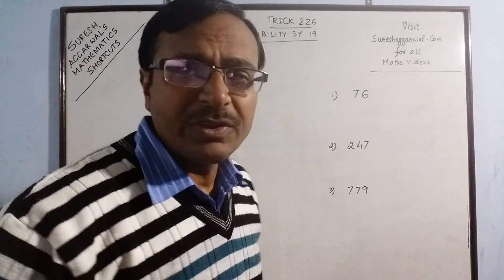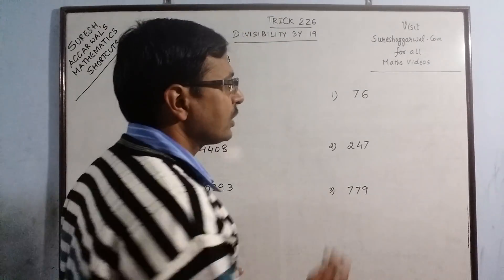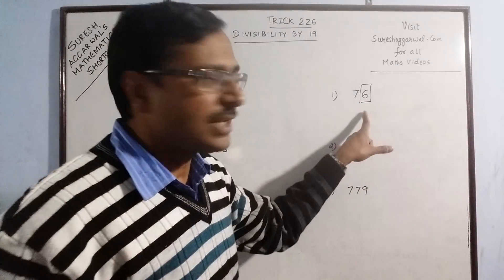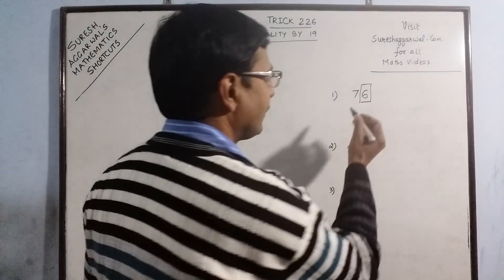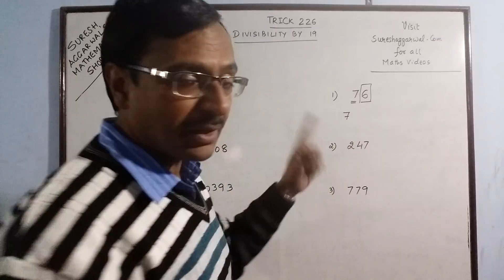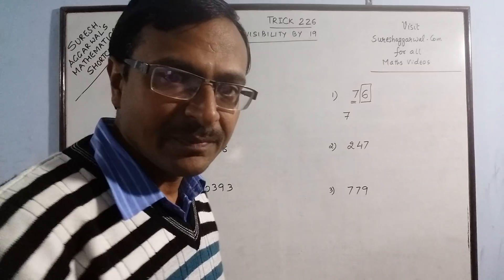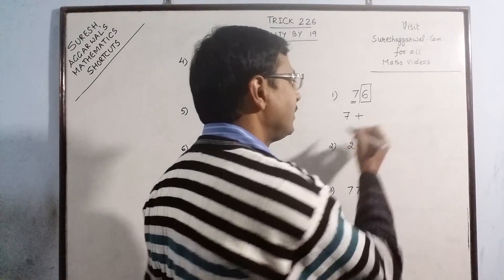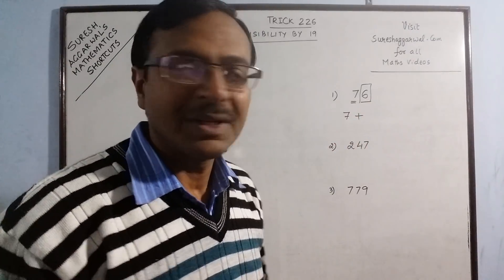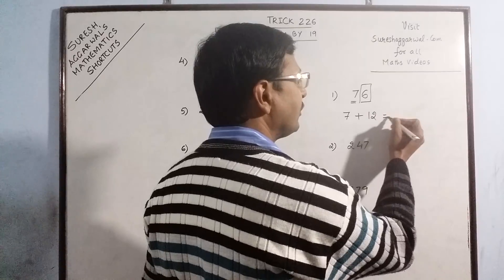Now, what we do in this method is to separate out the units digit. The unit digit here is 6. So what you do is just write the remaining number apart from the unit digit. What number is left? 7 is left. And add double of the unit digit to this number. Let us add double of 6 is 12, so we get 19.